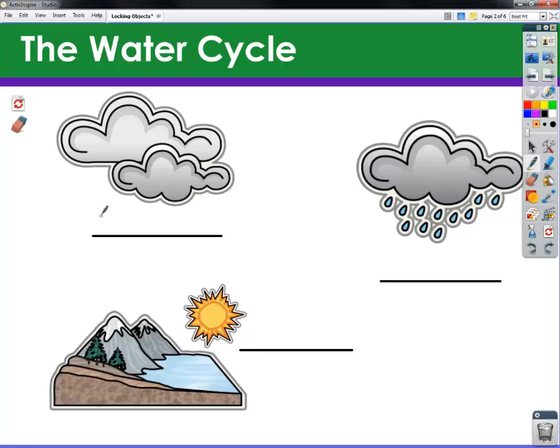So here, the purpose of this flip chart page is we're going to write the parts of the water cycle. I'm going to write condensation here, and down here we've got evaporation—my terrible handwriting—and precipitation.